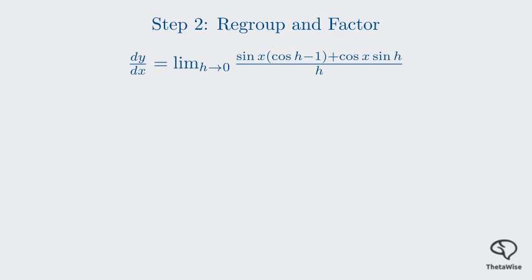Now we can split this into two separate limits. This separation is valid because the limit of a sum is the sum of the limits, provided they both exist. We now have two distinct limits to evaluate.